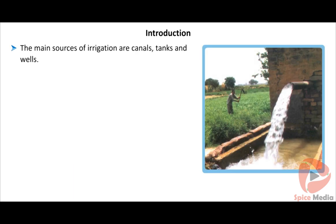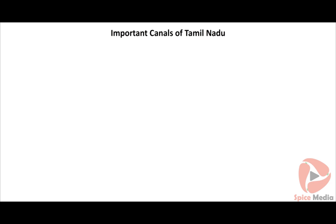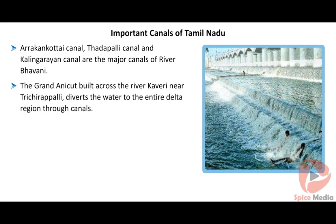The main sources of irrigation are canals, tanks, and wells. Canals are man-made channels of water taken from a perennial river, dam, or lake to supply water to agricultural fields. Important canals of Tamil Nadu include Arakankotay Canal, Tadapalli Canal, and Kalingarayan Canal — the major canals of river Bhavani. The Grand Anicut, built across the river Kaveri near Trichrappalli, diverts water to the entire delta region through canals.